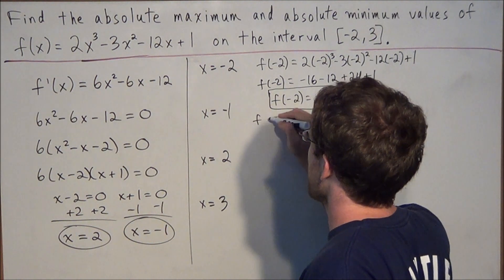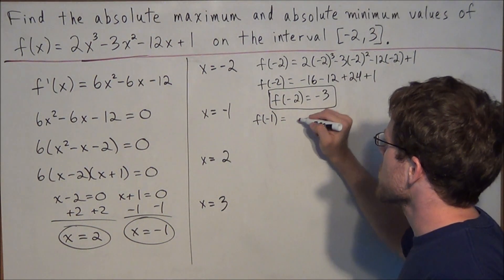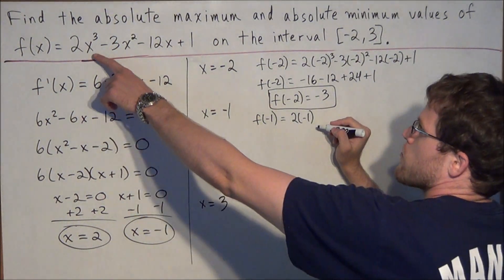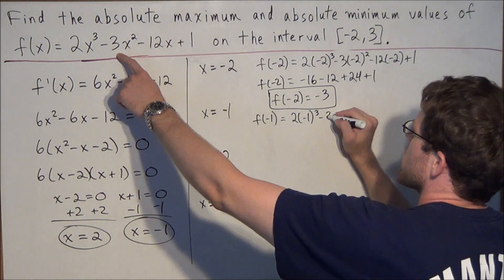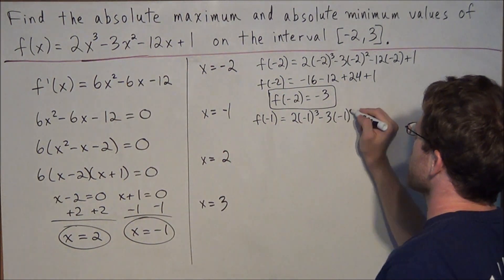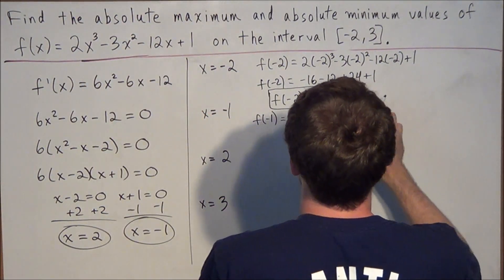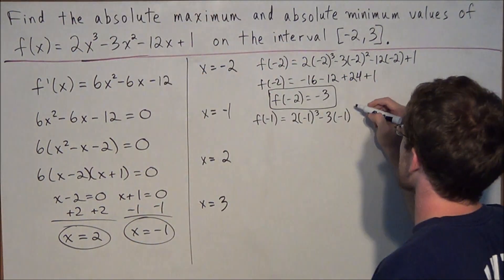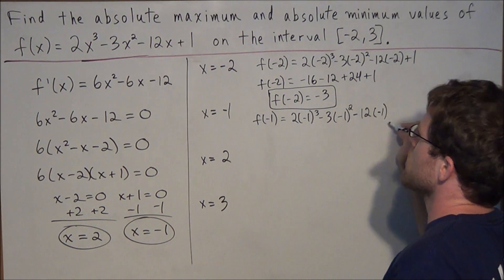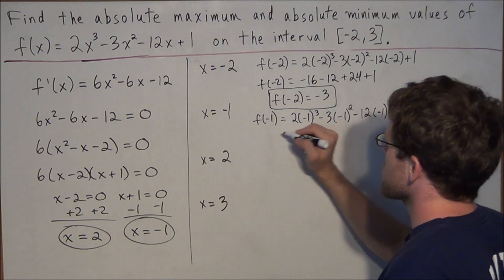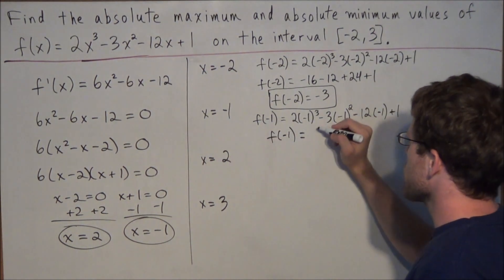Next we evaluate the function at x = −1: f(−1) = 2(−1)³ − 3(−1)² − 12(−1) + 1. When we simplify this, f(−1) equals positive 8.